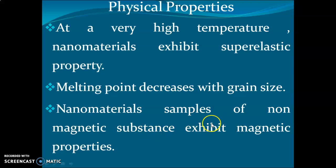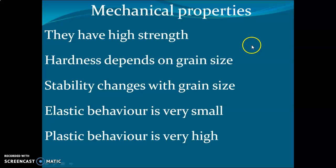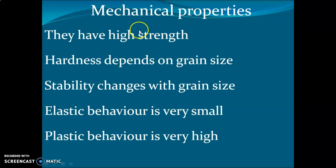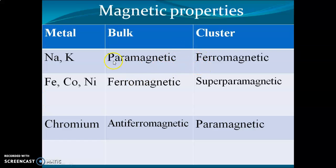Nanomaterials that are normally non-magnetic can exhibit magnetic properties at the nanoscale. Regarding mechanical properties: grain size plays a vital role. When grain size is very low, nanomaterials have very high strength. Hardness depends on grain size, stability changes with grain size, elastic behavior is very small, and plastic behavior is very high. These are some examples comparing behavior in bulk form versus nano form.